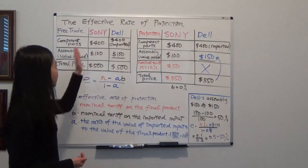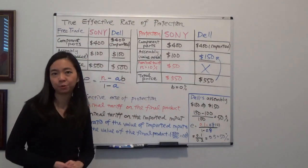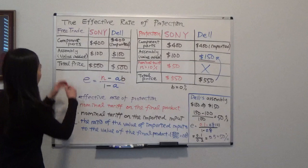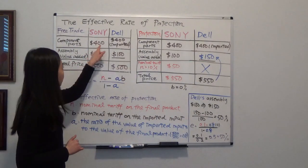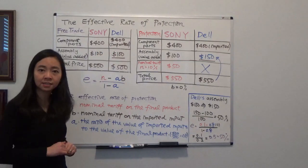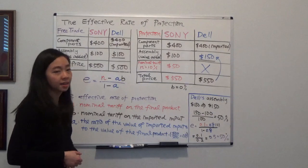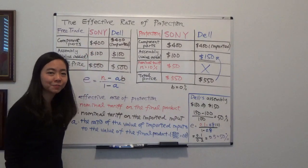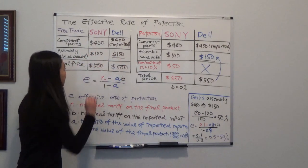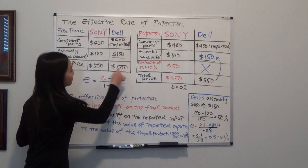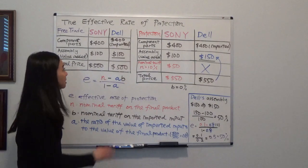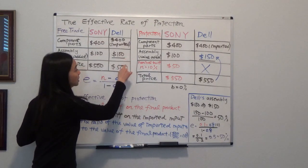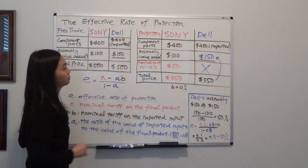Suppose we have two firms: Sony, that's a foreign firm, and Dell, that's a domestic computer firm. Under free trade, the two firms have a similar cost structure. The component parts of the computer are worth $400 for both firms. For Dell, they import these component parts, assemble them domestically, and then sell them. So the component parts are worth $400 and the assembly is worth $100, making the final price of the computer $500. Under free trade, Dell must make sure their domestic assembly stays within $100 so the final price will be $500 and they'll be able to compete with Sony.